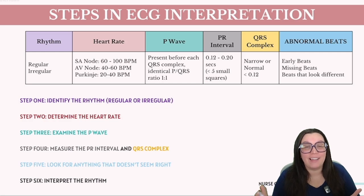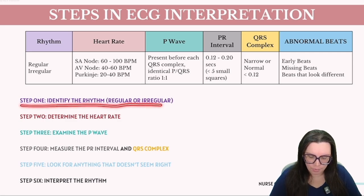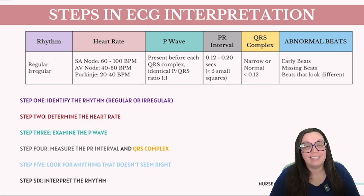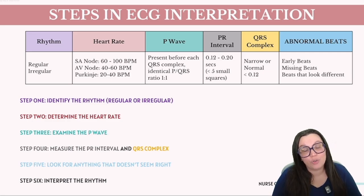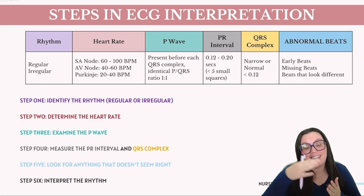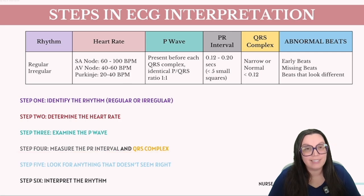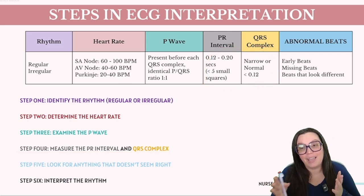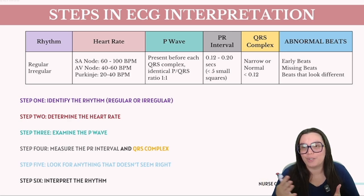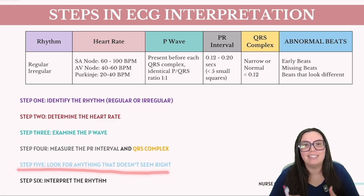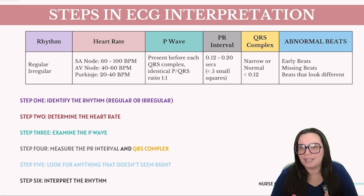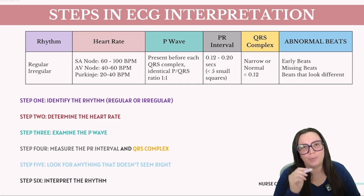Let's talk about how we identify ECG rhythms using a six-step process. Step one: identify whether the rhythm is regular or irregular. Step two: determine the heart rate to see if it falls within the SA node, AV node, or Purkinje fibers range. Step three: examine the P wave — make sure there is a P wave for every QRS complex with a nice upright shape. Step four: measure the PR interval and QRS complex to ensure they are within normal ranges. Step five: look for anything that doesn't seem right — early beats, missing beats, or beats that look different. Step six: interpret the rhythm.